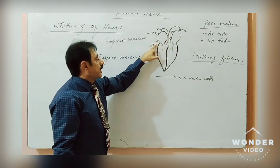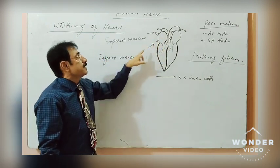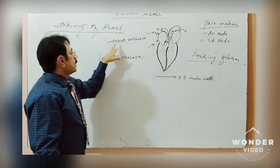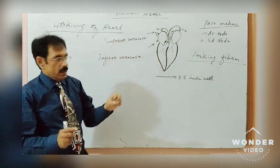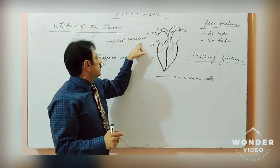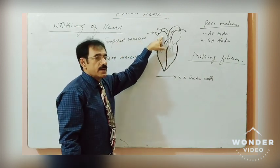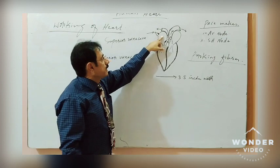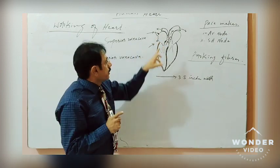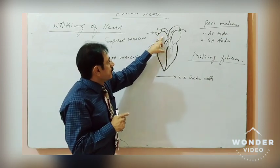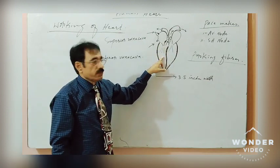The blood from all these lower body parts is carried to the right atrium through the inferior vena cava. This impure or deoxygenated blood is carried to the right atrium of the heart. When the right atrium contracts, the blood is forced into the right ventricle.